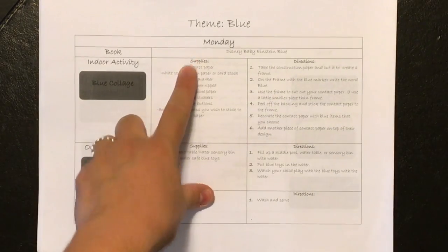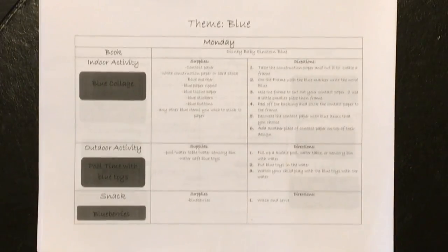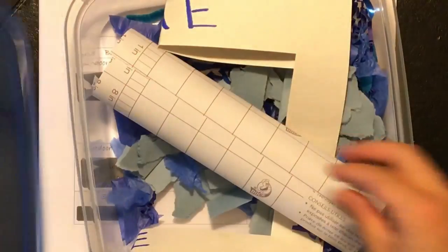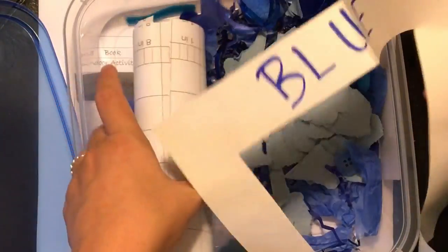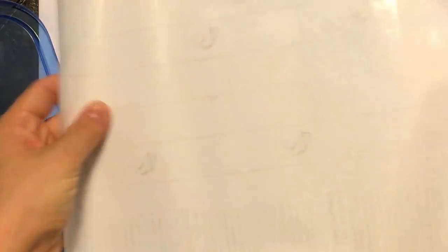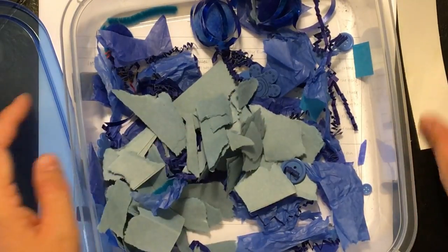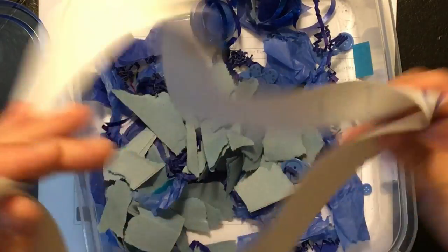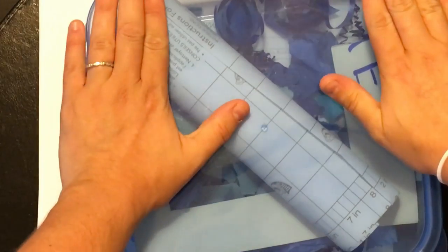So for every day, I'll have the book, and then my indoor activity for Monday is a blue collage. We did one of these similar when we did 4th of July, but I just made a frame, and then I'm going to use contact paper and put over the frame. And then this will be sticky, and he can stick all the blue things to his frame to make like a little picture. So that would be his blue collage.